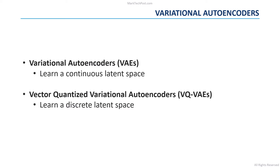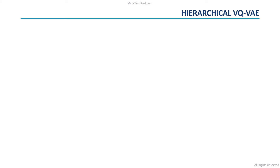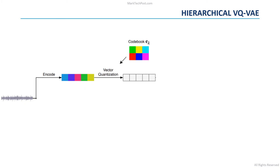Jukebox, in particular, uses a hierarchical vector quantized variational autoencoder. Let's start from a one-dimensional vector quantized variational autoencoder. It learns to encode an input sequence using a sequence of discrete tokens. The input passes through an encoder that encodes it into a sequence of latent vectors called embeddings. Each continuous latent vector is quantized by mapping it to its nearest vector from a codebook — just a list of discrete vectors. In this way, we obtain a discrete representation of the audio. Finally, a decoder takes the sequence of codebook vectors to reconstruct the input audio.